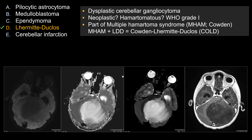Lhermitte-Duclos is part of the neural manifestation of Cowden syndrome, also known as multiple hamartoma syndrome. Recall that Cowden syndrome can produce multiple hamartomatous growths or multiple skin lesions, multiple GI polyps, and this patient would have an increased risk for development of other types of malignancy. The combination of Cowden syndrome with Lhermitte-Duclos is referred to as Cowden-Lhermitte-Duclos syndrome, and it is a form of neurocutaneous syndrome.